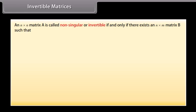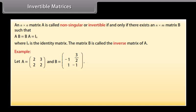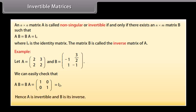Invertible matrices: An n×n matrix A is called non-singular or invertible if and only if there exists an n×n matrix B such that AB = BA = I_n, where I_n is the identity matrix. The matrix B is called the inverse matrix of A. For example, given A and B, we can check that AB = BA = identity matrix. Hence, A is invertible and B is its inverse.